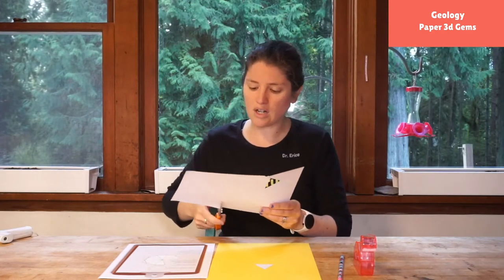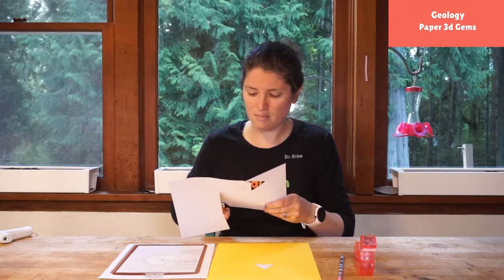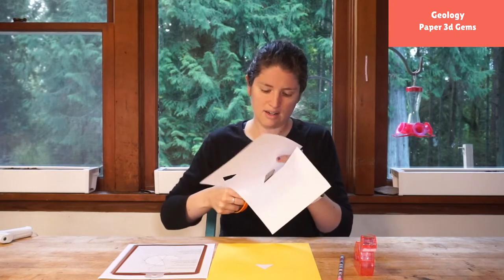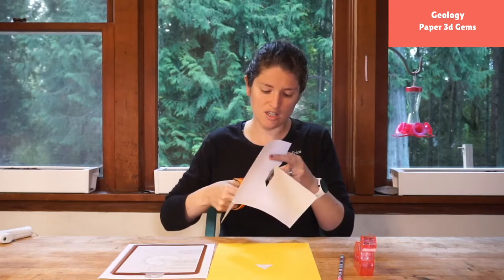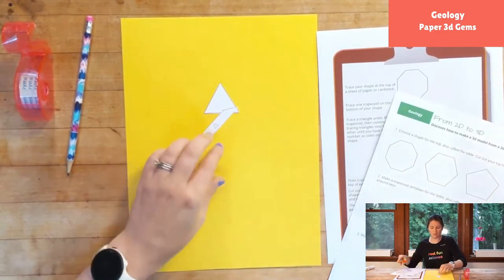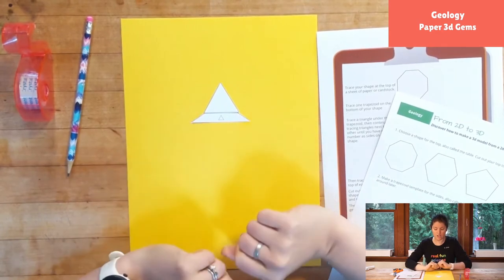So you can make a trapezoid, you can experiment with what happens if I make my trapezoid sort of more elongated or less so, and you can see how that changes what your gem looks like. And what we'll do is we'll put our trapezoid along our triangle.